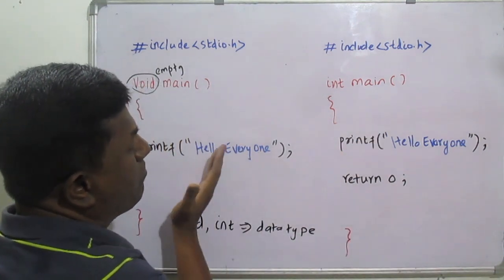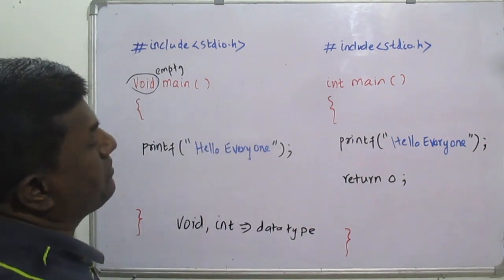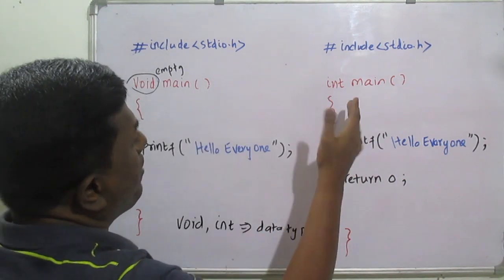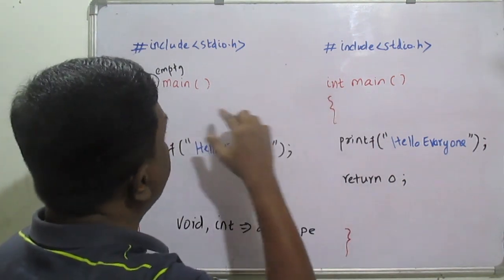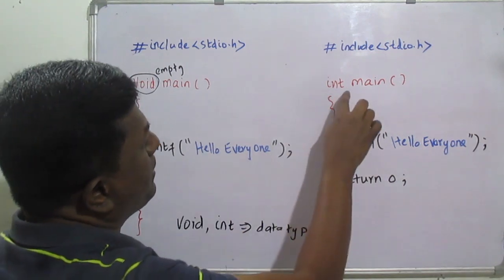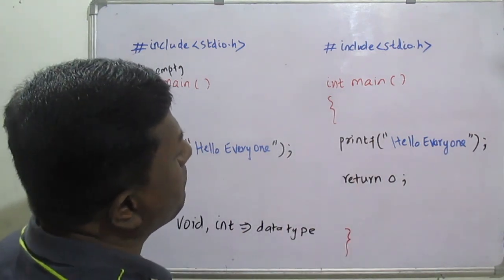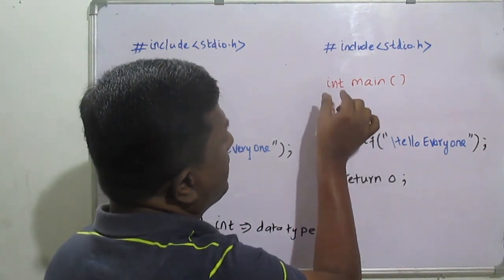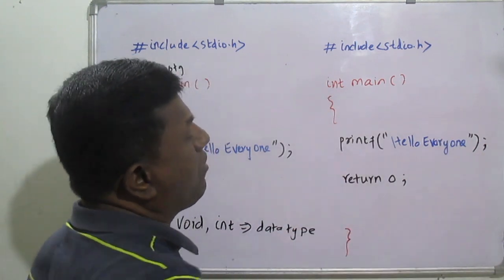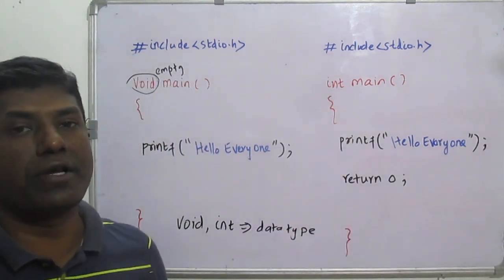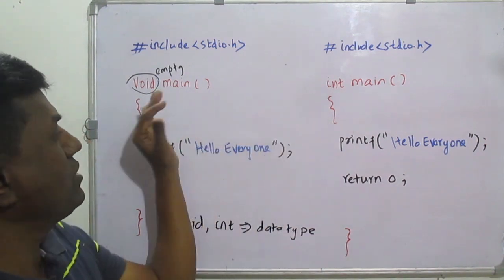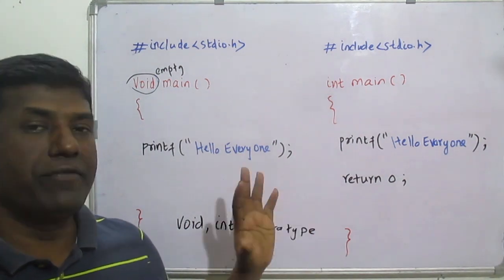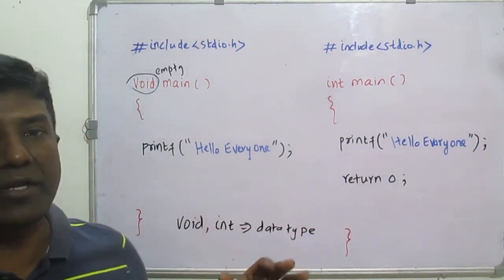Most of the time we have confusion between void main and int main. With void main the return type is void, so nothing is returned — no problem. But with int main, the integer return type value is written to the operating system — that is what we have to understand. I hope the difference between void main and int main is clear, and we will discuss further about C programming.